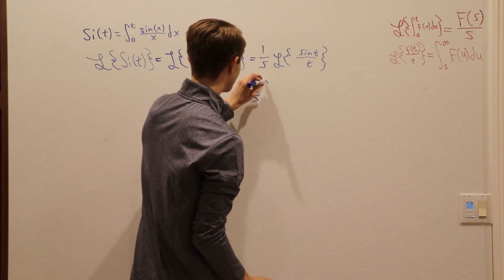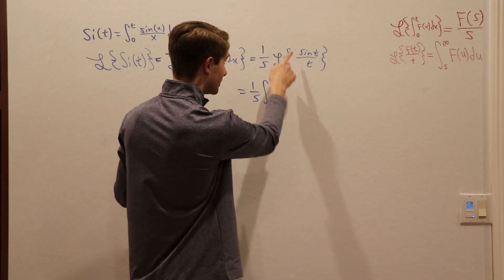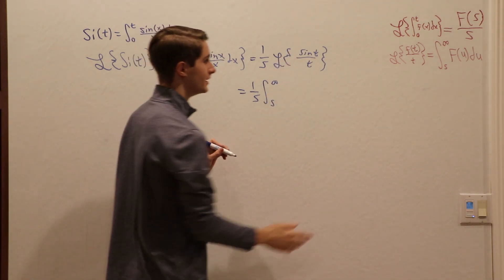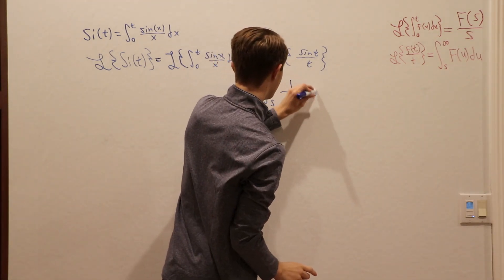In our case, we can keep the 1 over s, and we have the integral from s to infinity. The Laplace transform of sine of t is 1 over s squared plus 1. In this case, we're writing it in terms of u, so we have 1 over u squared plus 1 du.